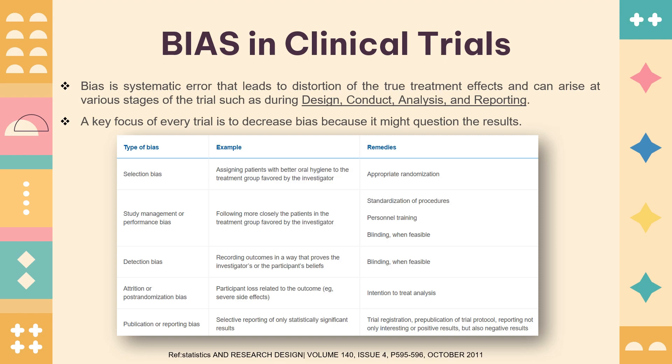Let's understand what types of bias are involved in clinical trials and how we can rectify them. The first is selection bias — when an investigator, for example in an oral hygiene trial, has personal bias and assigns a friend or relative to the active treatment group while giving placebo to other participants. This is a randomization or selection bias where the allocation is skewed in favor of the investigator's relative.